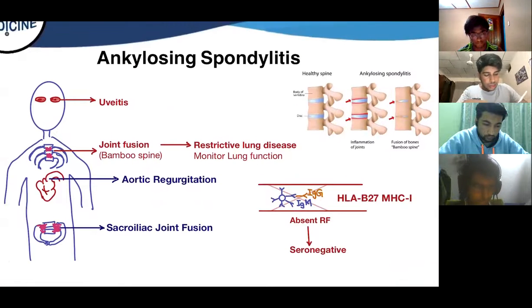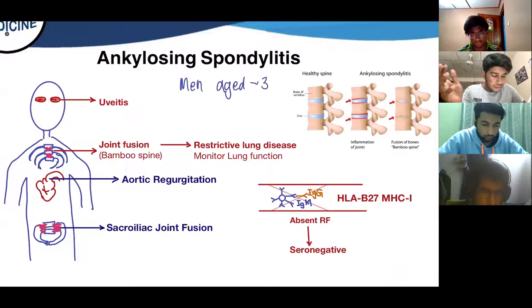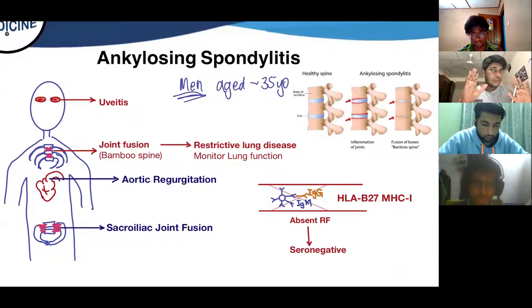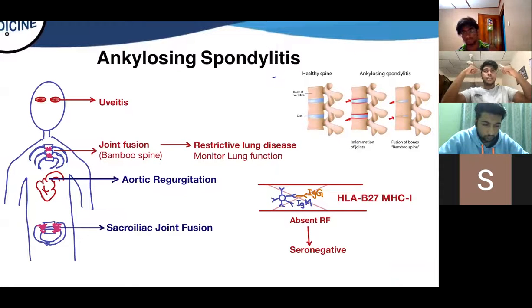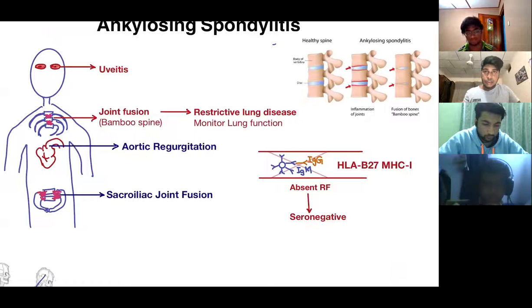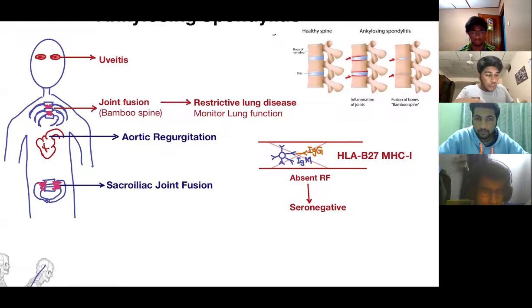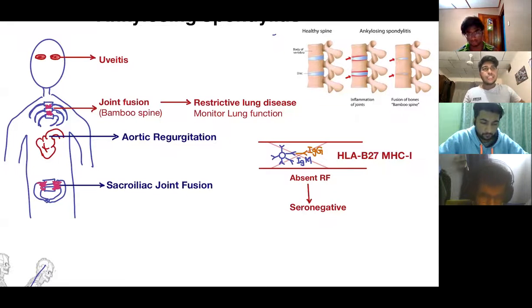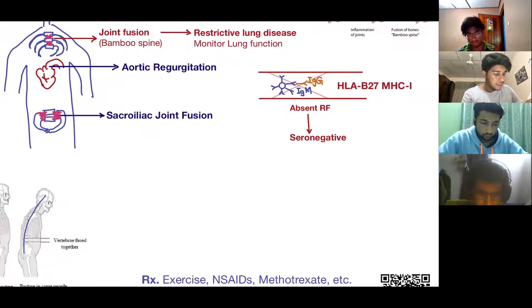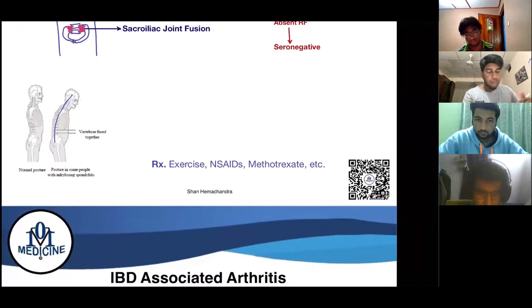Ankylosing spondylitis is common in young men, usually around age 35. Important associations include uveitis (inflammation of the uvea), aortic regurgitation, and sacroiliac joint fusion. The bamboo spine joint fusion can cause restrictive lung disease because the vertebrae stop moving during inhalation. The way you monitor this disease is by monitoring lung function. This condition is also seronegative — no rheumatoid factor. Treatment is mainly exercise.